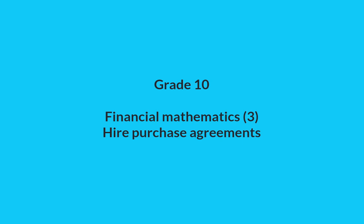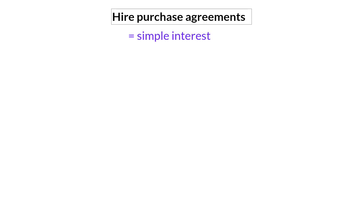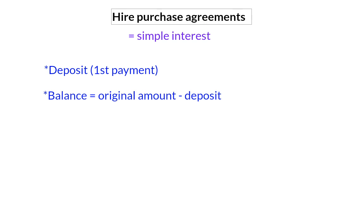In this video we're going to have a look at hire purchase agreements. A hire purchase agreement is a short-term loan that is often used to buy household appliances and furniture. With a hire purchase agreement, simple interest is always used. Usually it is expected of the buyer to pay a deposit or a first payment. The balance after that deposit has been made, along with interest added to that balance, is then repaid in a certain amount of time.